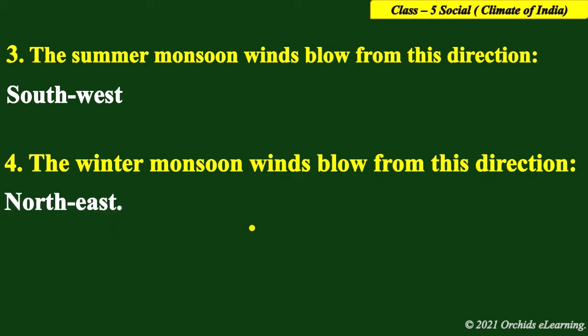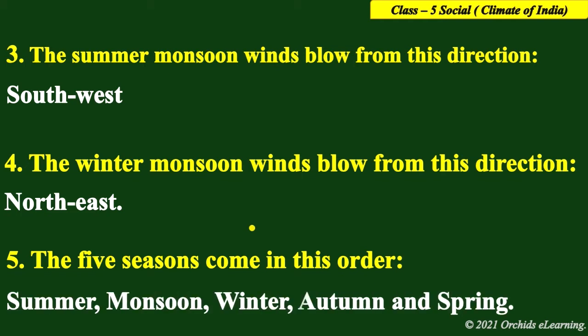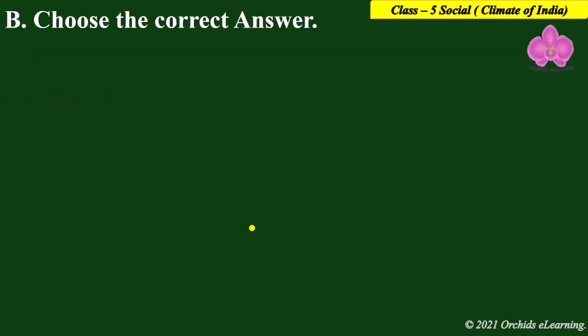Number four: the winter monsoon winds blow from the northeast direction. Number five: the five seasons come in this order — summer, monsoon, winter, autumn, and spring.